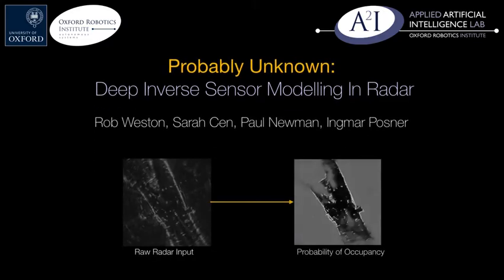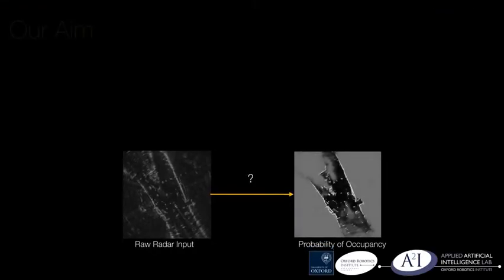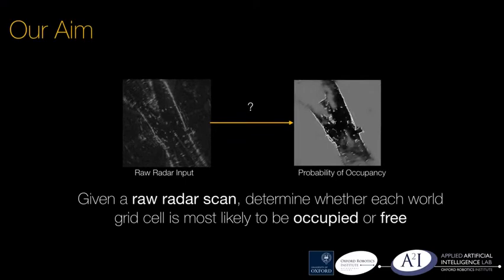Probably unknown: deep inverse sensor modelling in radar. Radar presents a promising alternative to LiDAR and vision in autonomous vehicle applications, being able to detect objects at long range under a variety of weather conditions.